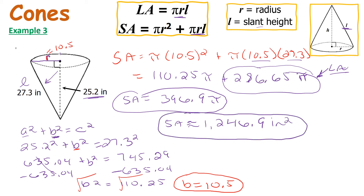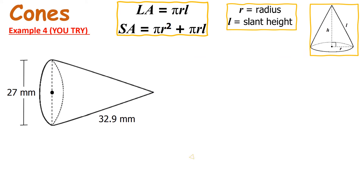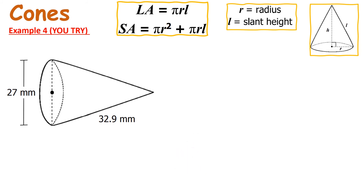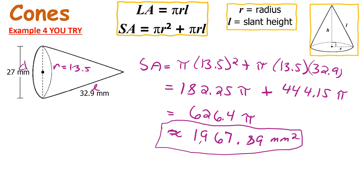For the next problem, we have a cone — find the surface area on your own. Go ahead and pause the video. You should have gotten 1967.89 millimeters squared, with the lateral area shown as well. Pause and analyze the work if you didn't get it correct.